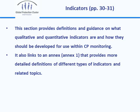The indicators section, pages thirty and thirty-one, provides definitions and guidance on how qualitative and quantitative indicators can be used in the child protection monitoring process. There is also annex one in draft five of the toolkit that provides detailed definitions for different types of indicators and foundational definitions like what a SMART indicator is. In this annex you will find more detailed definitions — for example, for situation monitoring: what a situational indicator is; for response monitoring: what an input indicator, output indicator, and quality indicator are. All of those are outlined there.